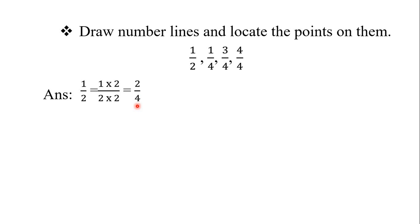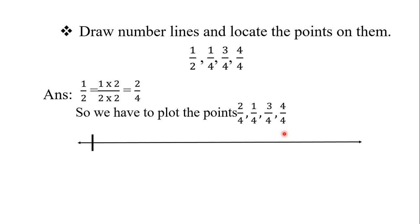Ab ban gaya. Now we are going to locate the points: two upon four, one upon four, three upon four, and four upon four. Hamen is fraction ko like fraction me convert kar liya hai. We'll draw the number line. Ham sabse pehle isko zero, one, two me le lete hai. Now ye jo parts hai, yarni ki jo denominator me number hai na, iska matlab hota hai ham zero to one ke beech me kitne partitions karne wale hai. Four parts hone chahiye.